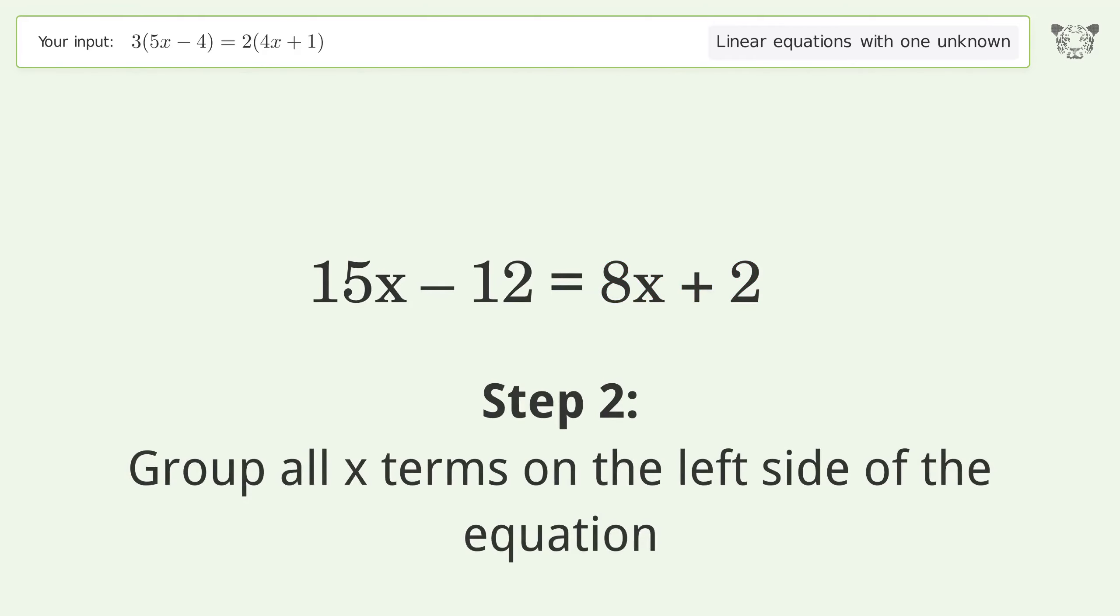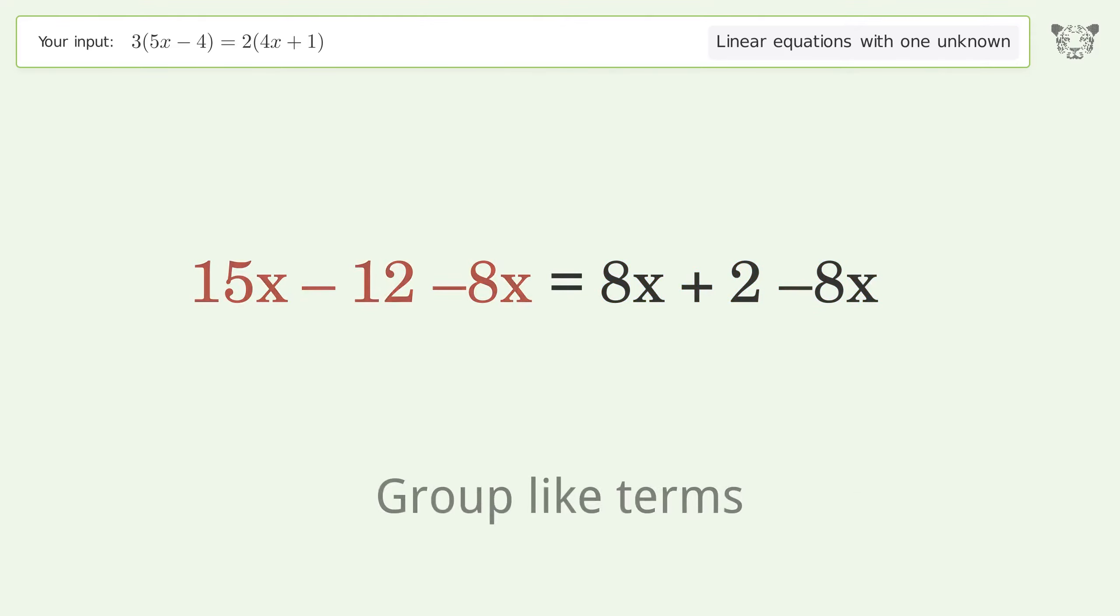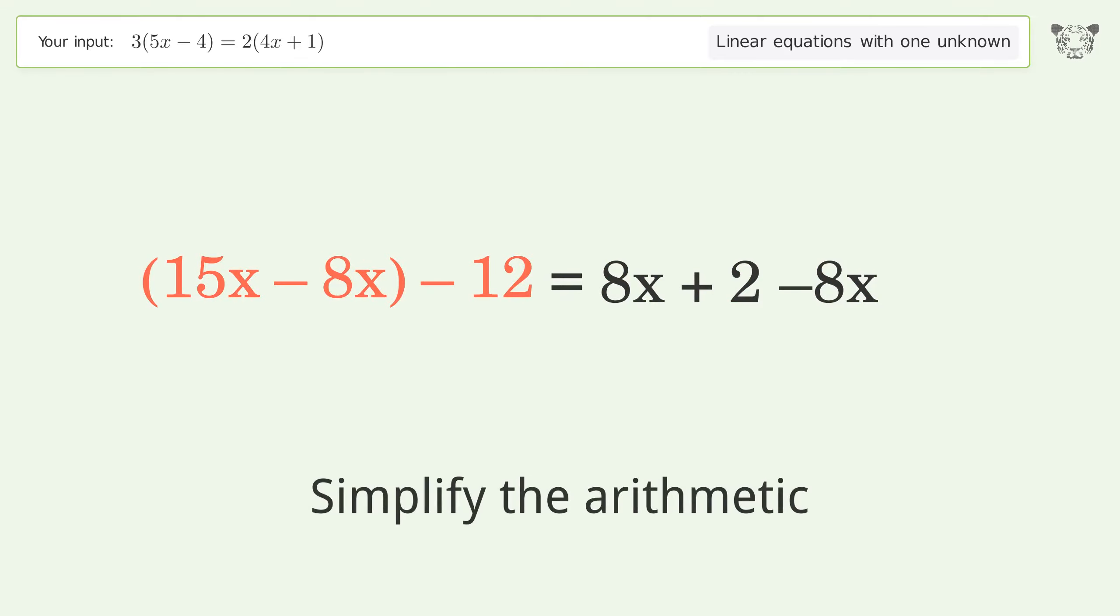Group all x terms on the left side of the equation. Subtract 8x from both sides. Group like terms. Simplify the arithmetic.